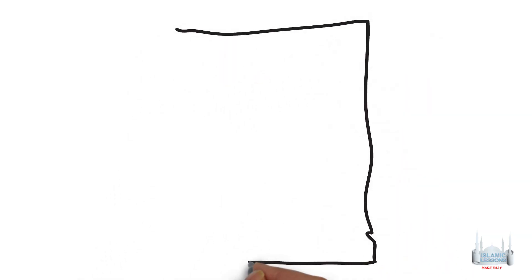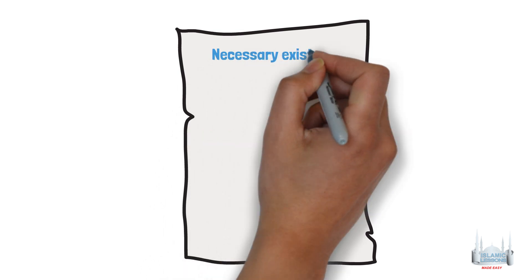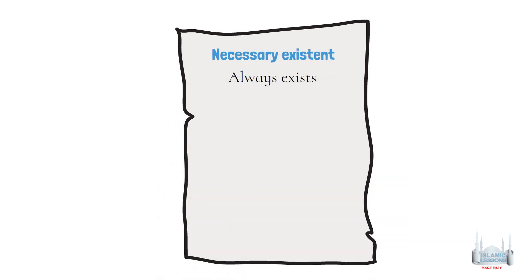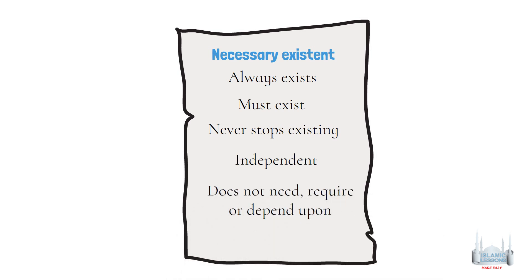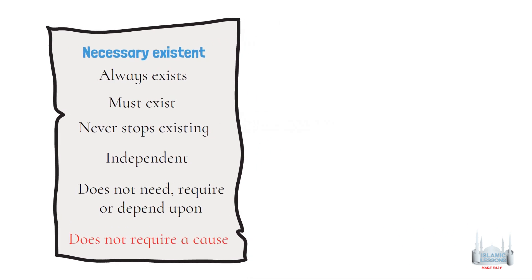Before we start the proof, let's first understand some terms. 1. Necessary existent: it always exists, it must exist, it never stops existing, it is completely independent. It is an existent which does not need, require, or depend upon any other existent for coming into being. In other words, it does not require a cause to exist.